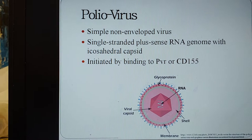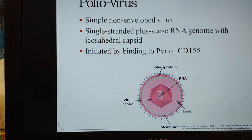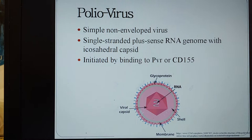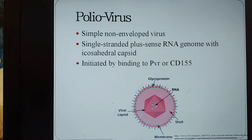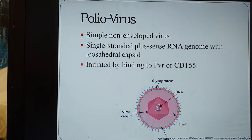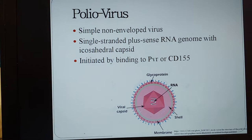The poliovirus is a simple non-enveloped virus, and without the envelope it needs another mechanism that allows the viral genome to enter the host. It is known as an enterovirus, which means it is transmitted through the fecal-oral route via salivary or respiratory droplets. It has a single-stranded plus-sense RNA genome with an icosahedral capsid composed of 60 copies each of four coded proteins called VP1, VP2, VP3, and VP4. Infection is initiated by binding to the PVR, or CD155 — the poliovirus receptor — and once bound at physiological temperature it undergoes an irreversible conformational change.